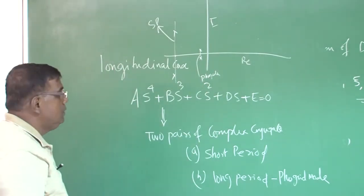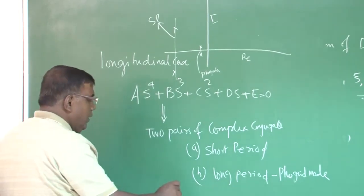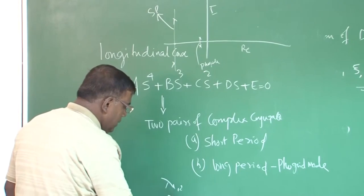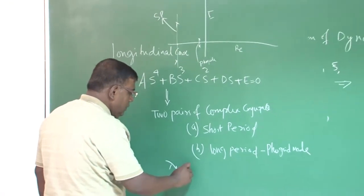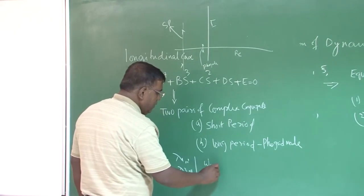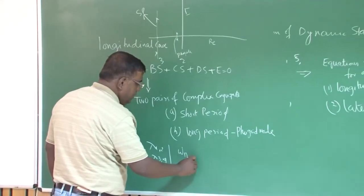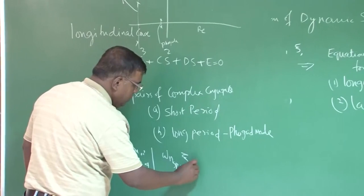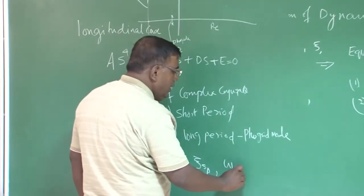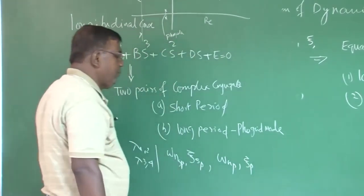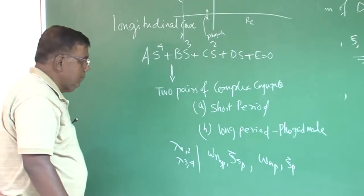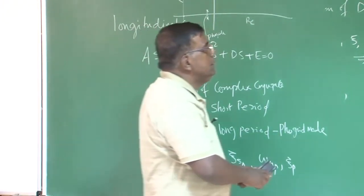After knowing these roots, we know how to find, once I know lambda 1, lambda 2, lambda 3, lambda 4, which are complex conjugate, I know how to find natural frequency short period, zeta short period. Similarly, omega_n phugoid and zeta phugoid. This is one part we have done.